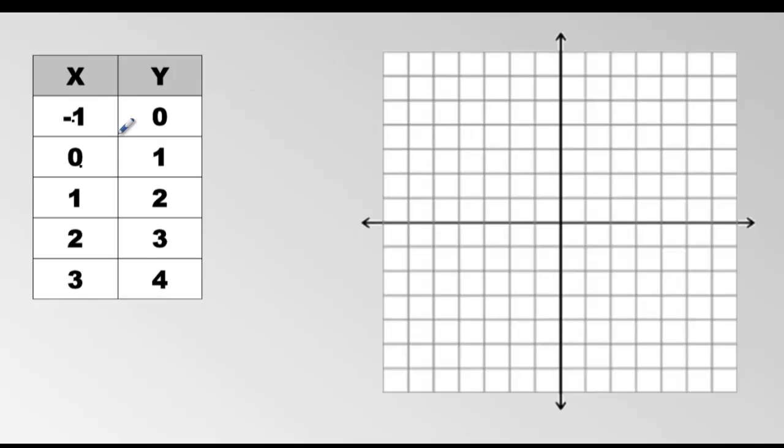Before we go ahead and graph this data, we have to remember that the horizontal line is called the x-axis and the vertical line is called the y-axis. We also have to remember that where they connect is called the origin.